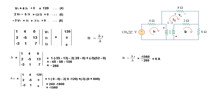Now we can find V0: V0 = 8 × I3 = 8 × 6 = 48 volts. I hope this demonstrates another useful technique. Whichever method — nodal analysis or mesh analysis — you are more comfortable with, you can follow that technique. Thank you.